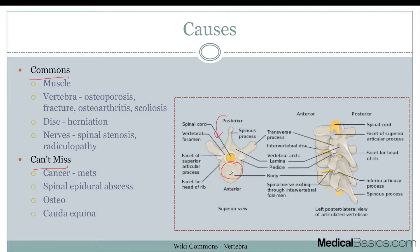From there we start thinking about the can't-misses — things like cancer when you have metastatic disease, or any type of infection like spinal epidural abscess or osteomyelitis, as well as cauda equina. These can't-misses are things you're going to be acting on much sooner, as we'll see when we talk about management.